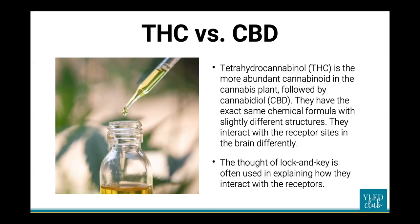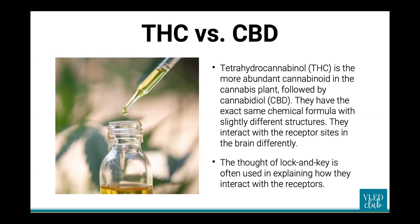CBD parks at a different docking site on the CB1 receptors, attaching to what's known as an allosteric binding site. When the CBD key is placed in the allosteric receptor, it does not initiate a signaling cascade like THC, but it does impact how the CB1 receptor responds to stimulation by THC.